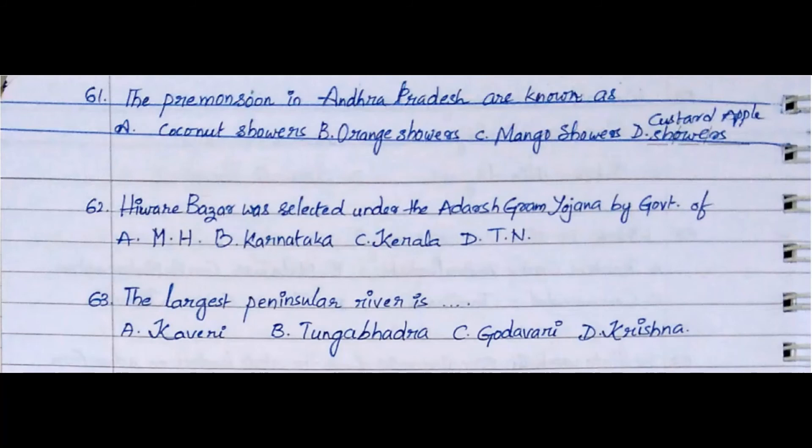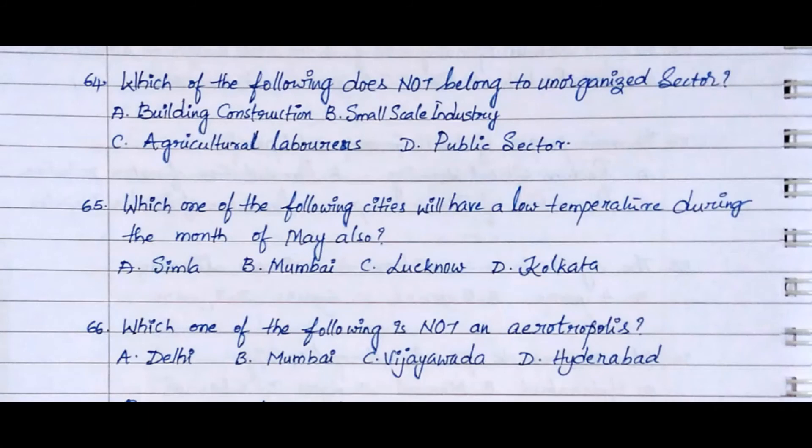Question 63: The largest peninsular river is. Option A. Cauvery, Option B. Tungabhadra, Option C. Godavari, Option D. Krishna. The answer is Option C. Godavari.